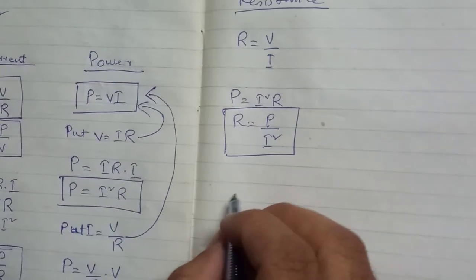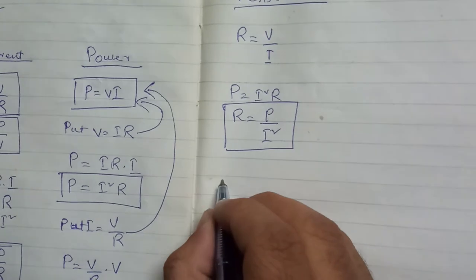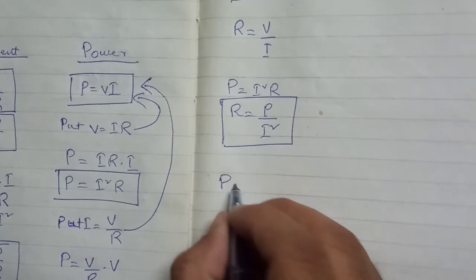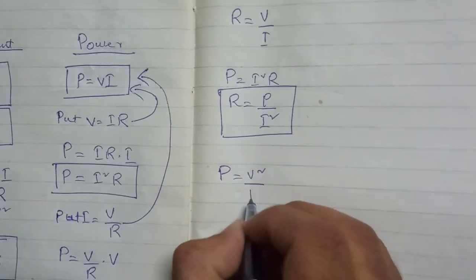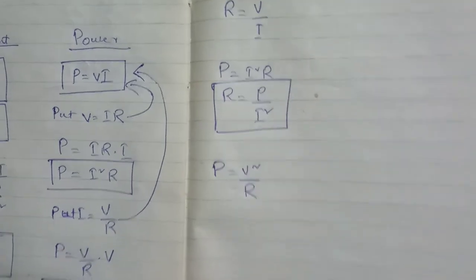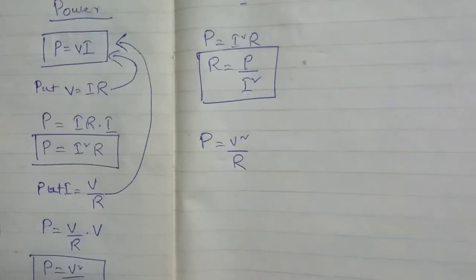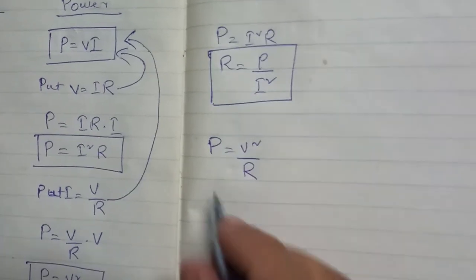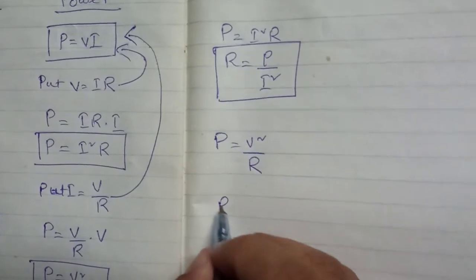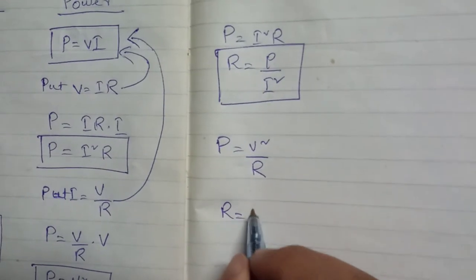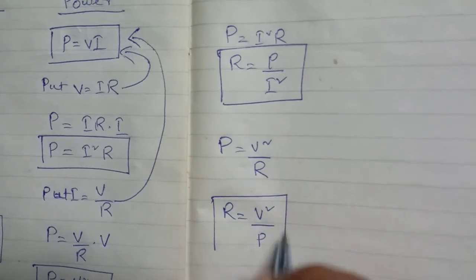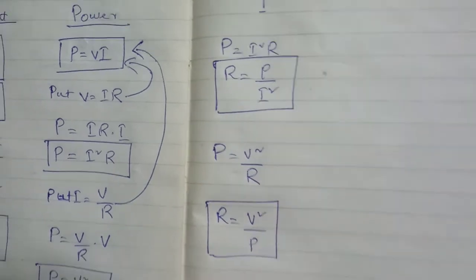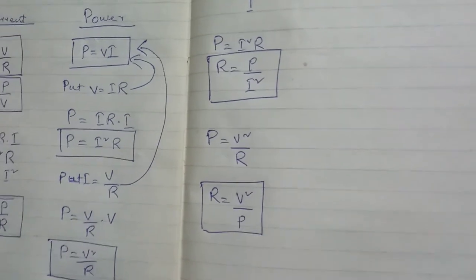The third formula you will get from P is equal to V squared upon R. Rearranging, it becomes R is equal to V squared upon P. This is the third formula for resistance.